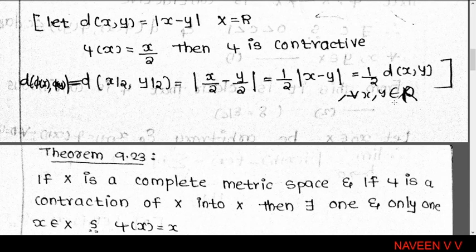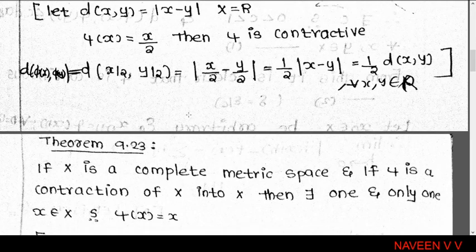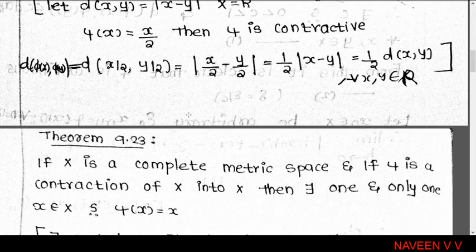That is, d(φ(x), φ(y)) = (1/2) · d(x,y) for all x, y in ℝ. So by choosing c = 1/2, which lies in (0,1), we can say that φ is a contractive map.